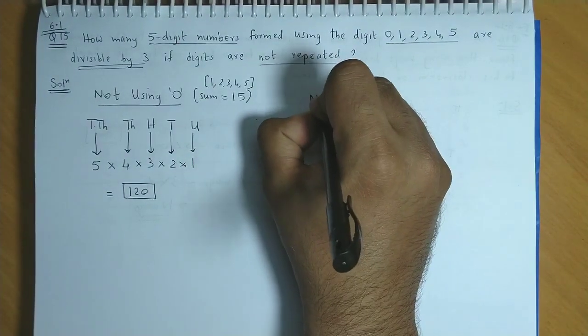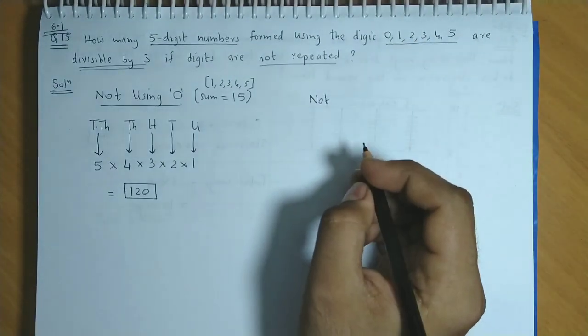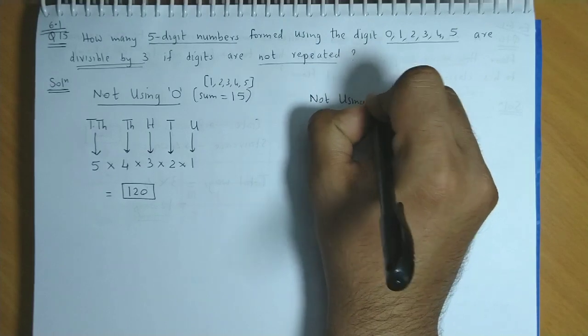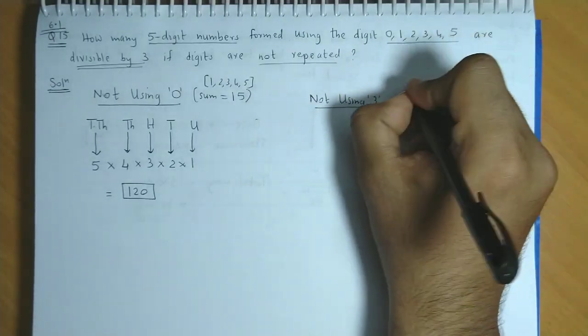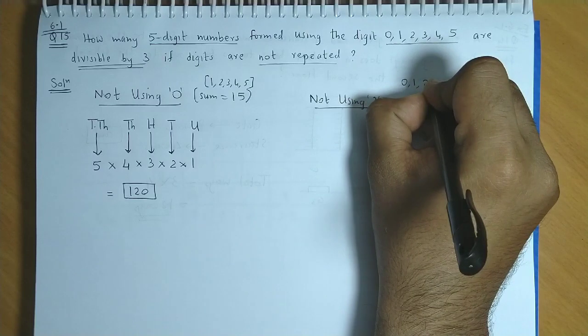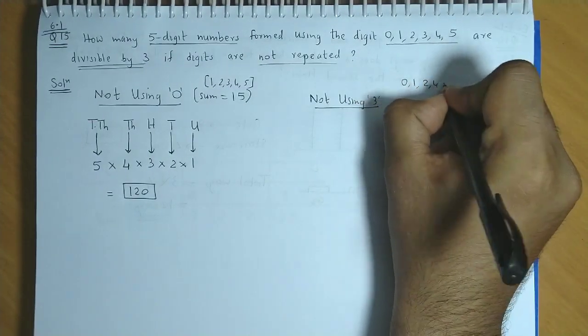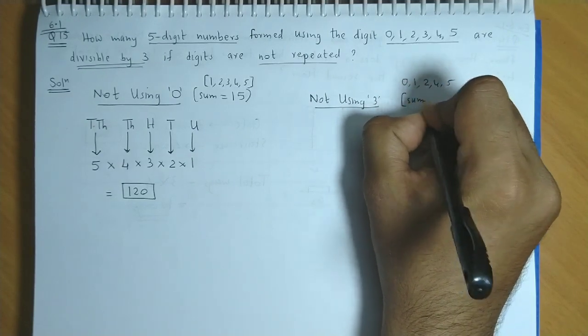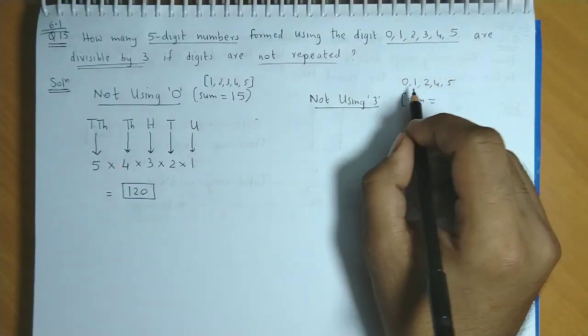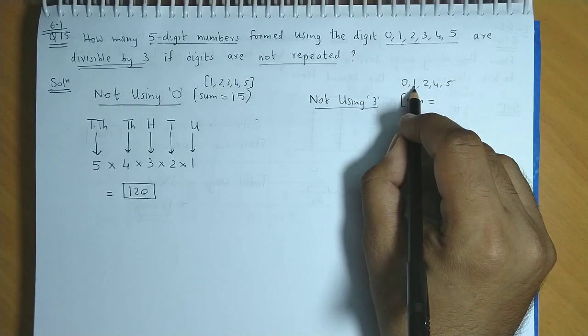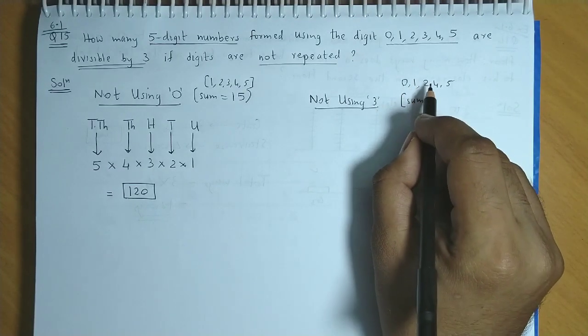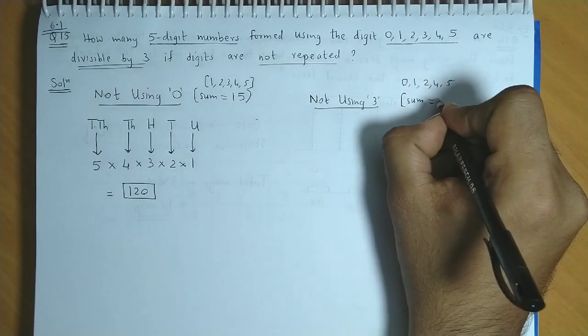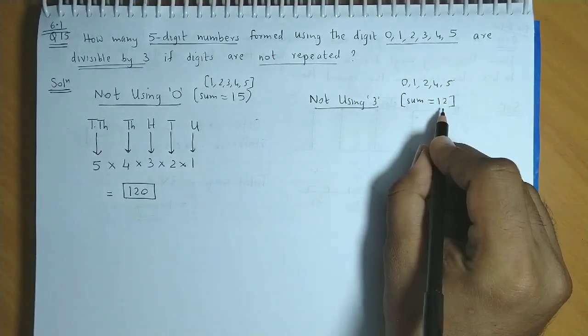The second case is if we remove 3 from this set. So now we're not using 3. We would be left with 0, 1, 2, 4, and 5. If we don't use 3, let's see what the sum is. 0 plus 1 is 1, plus 2 is 3, plus 4 is 7, plus 5 is 12. So the sum of digits is 12. Again the number would be divisible by 3.